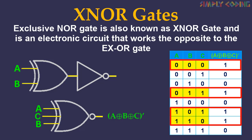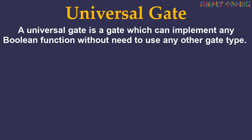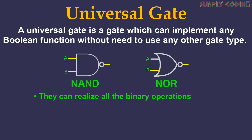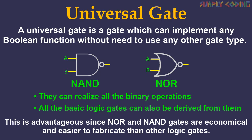Now let's see universal gates. A universal gate is a gate that can implement any boolean function without need to use any other gate type. The NAND and NOR gates are referred to as universal gates. They are called universal gates because they can realize all the binary operations — you can create any logical expression with just NAND or NOR gates. All the basic logic gates can also be derived from them. This is advantageous since NOR and NAND gates are economical and easier to fabricate than other logic gates.